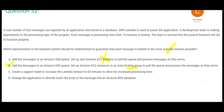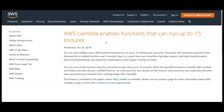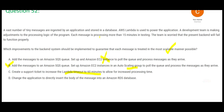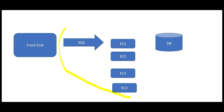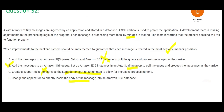Now let us look at C. The problem with C is it tells you to increase the Lambda timeout to 60 minutes. We all know you cannot go above 15 minutes for the timeout of Lambda. And here each message is processing for more than 15 minutes, so Lambda definitely cannot kick in. So C is wrong. D says you change the app to directly insert the body of the message into RDS. This is not a best practice from an architecture design perspective. You should have a microservice-based architecture which loosely couples components. Option D is an example of tight coupling.